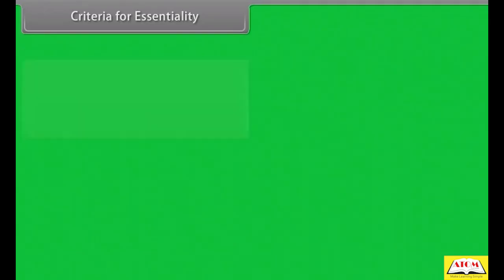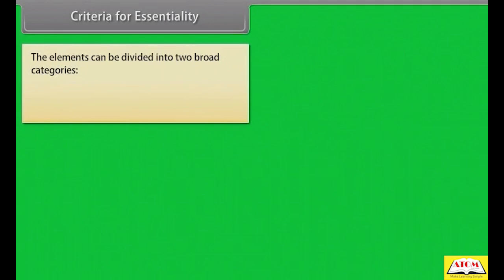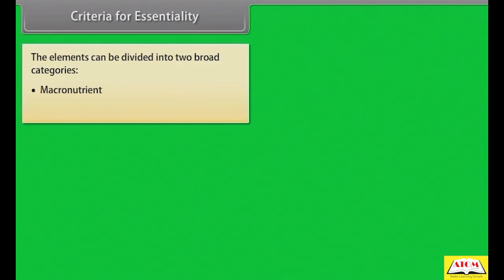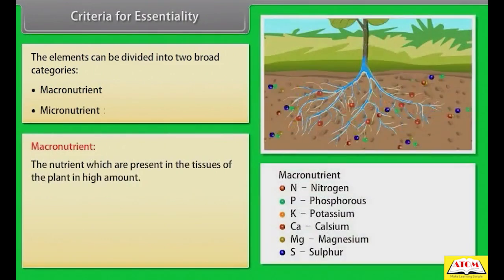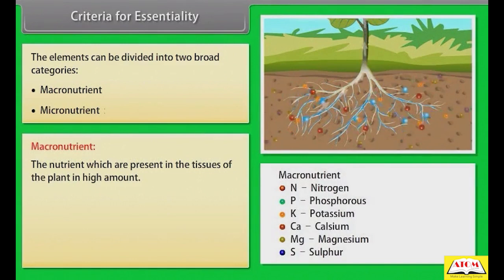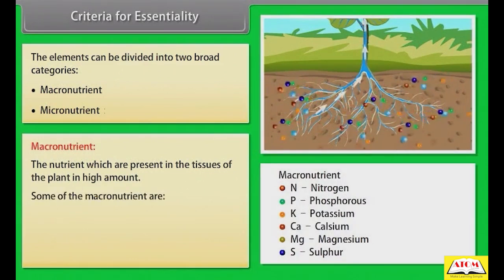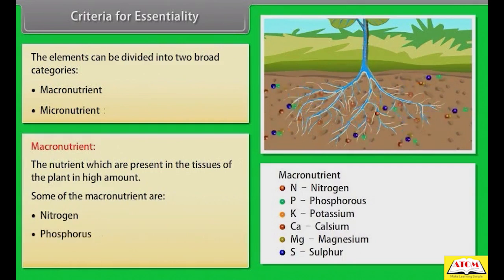The elements can be divided into two broad categories: Macronutrients and Micronutrients. Macronutrients are the nutrients which are present in the tissues of the plant in high amounts. Some of the macronutrients are Nitrogen, Phosphorus, and Potassium.